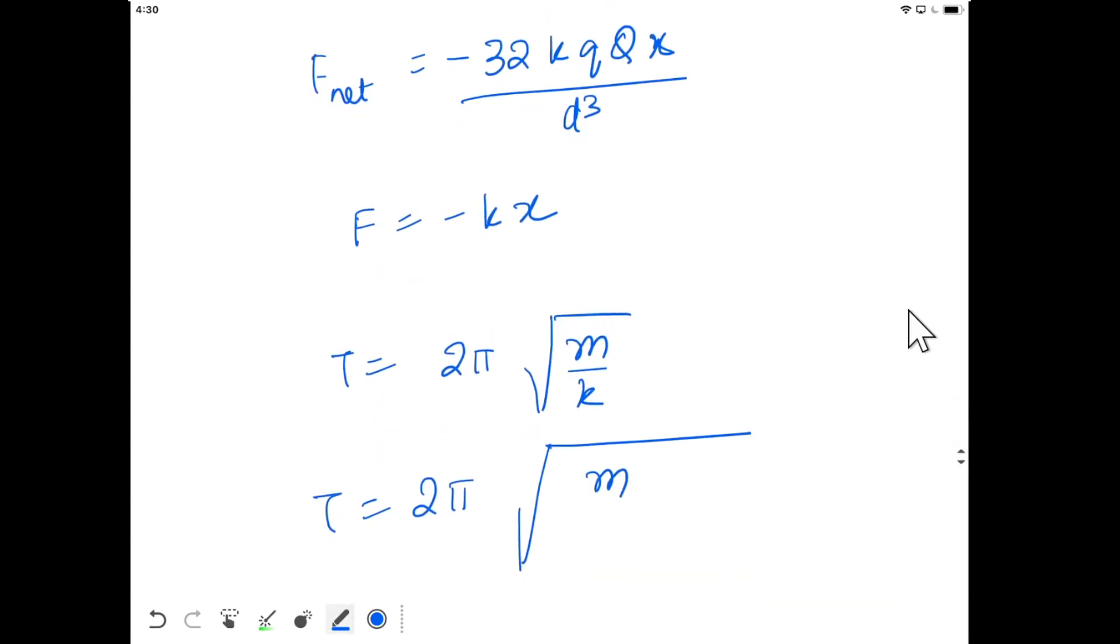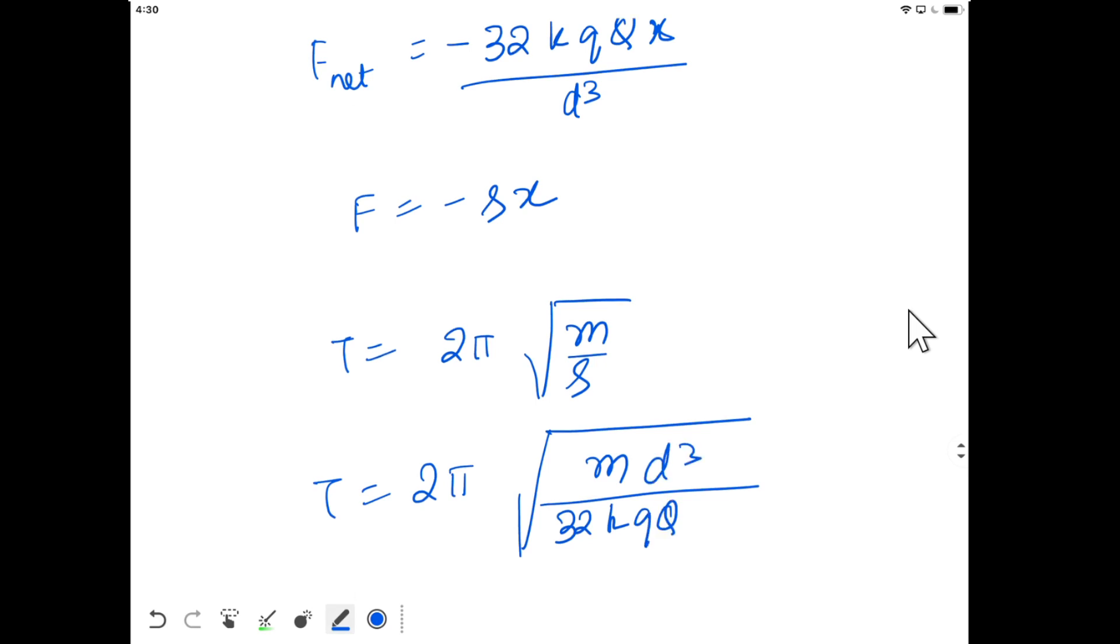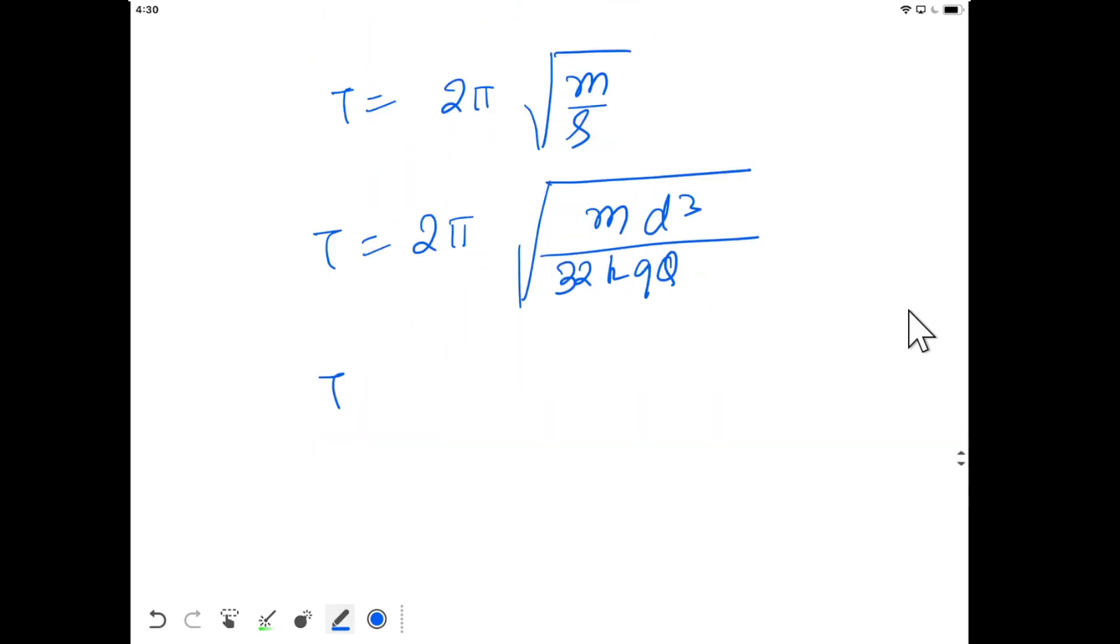This spring constant, let's write it as s, stiffness of the spring. s will be 32kQq/d³. If I put the value of k, T will be 2π√(md³/(32Qq times 4πε₀)).